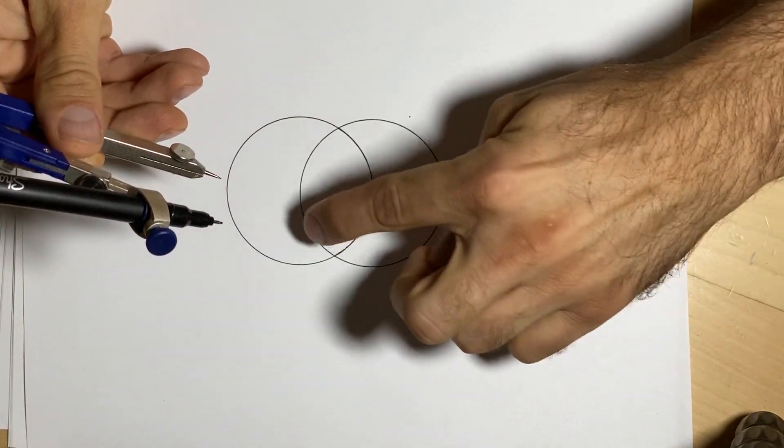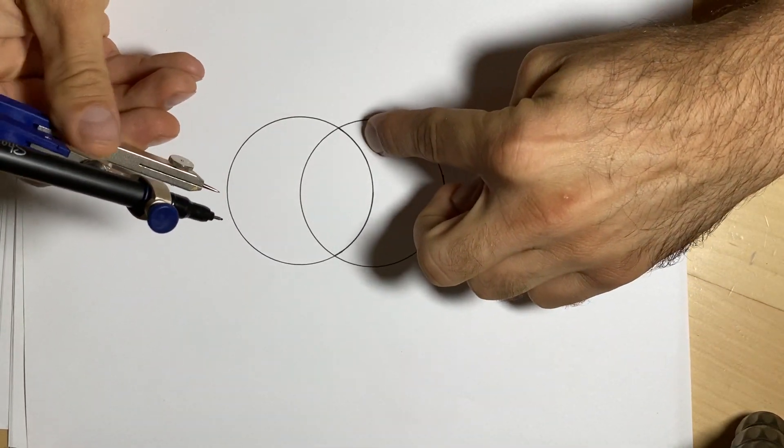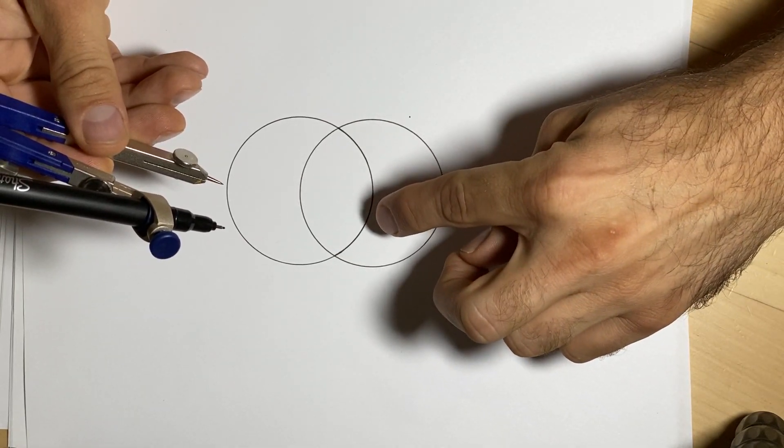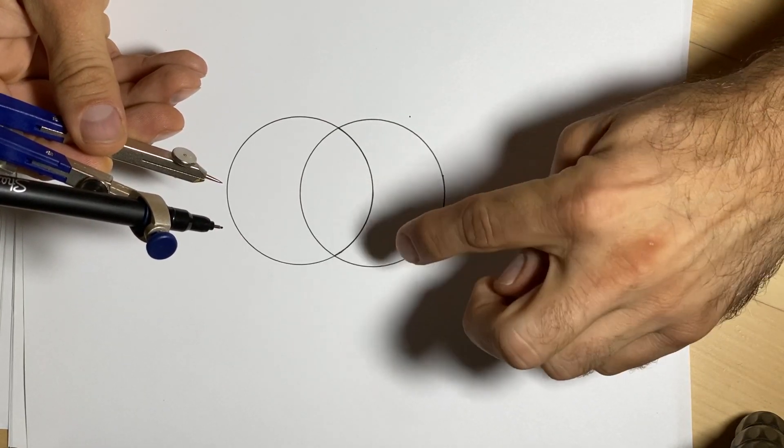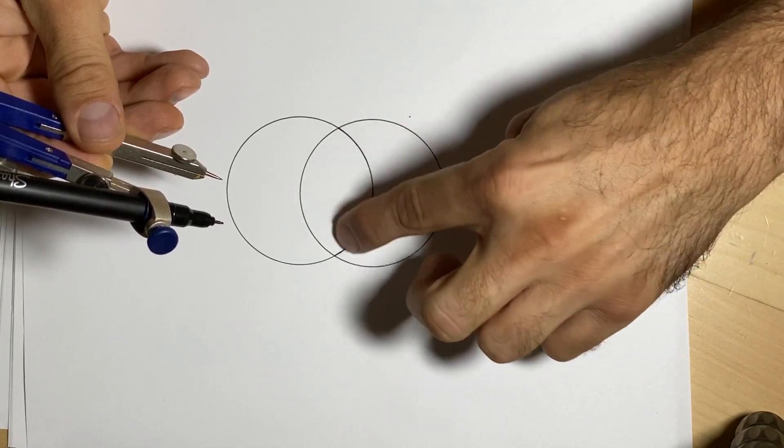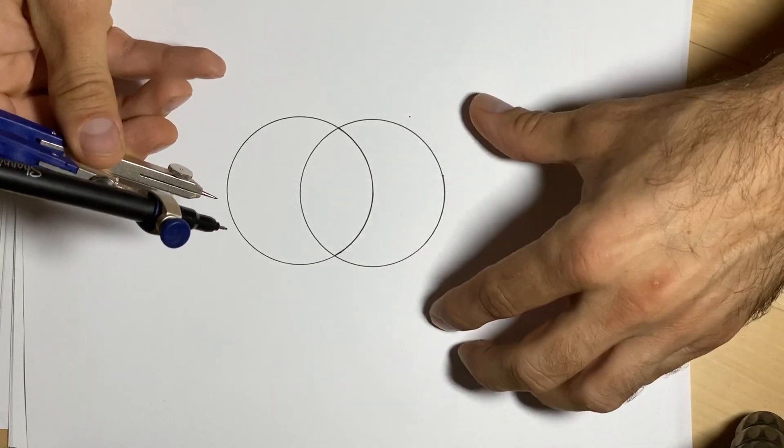These two circles in this shape here is called the vesica piscis. You'll see it a lot in religion, in Christianity and Buddhism. They'll put the Buddha in the middle. The Virgin Mary is often in this shape in necklaces.